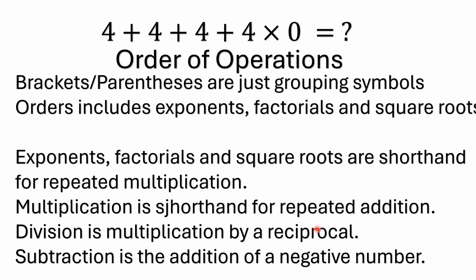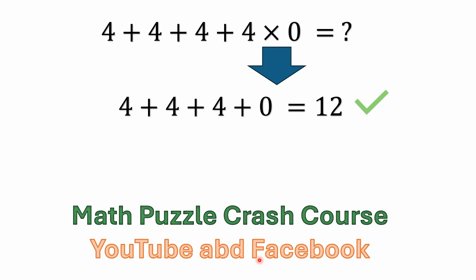Similarly, subtraction is the same thing as addition — it's adding a negative number. So again, multiplication has precedence over addition. Even though the multiplication is written last, you still have to solve it first. And 4 times 0 is, of course, 0. So 4 plus 4 plus 4 plus 0 is 12. That is the correct answer.